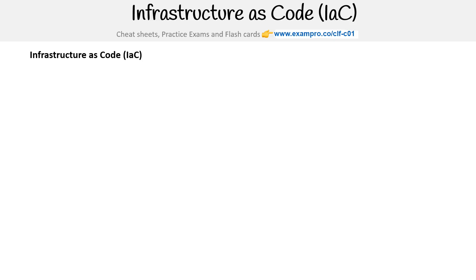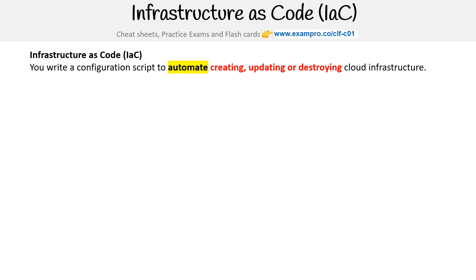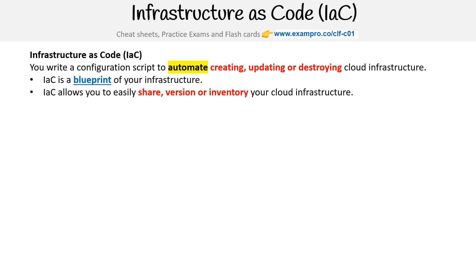Hey, this is Andrew Brown from Exam Pro, and we are taking a look at Infrastructure as Code, also known as IAC. This allows you to write a configuration script to automate creating, updating, or destroying your cloud infrastructure. You can think of IAC as a blueprint of your infrastructure, and it allows you to easily share, version, or inventory your cloud infrastructure.